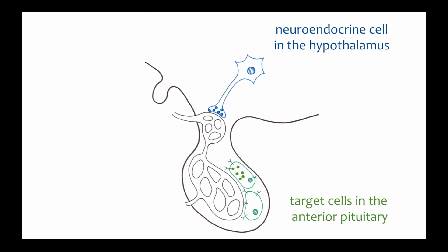The integration of the nervous system and the endocrine system often results from a cascade of hormone release that starts with the hypothalamus. A signal from the nervous system comes into a neuroendocrine cell in the hypothalamus, triggering the formation of an action potential. The action potential causes the release of a neurohormone, often called a releasing factor, into the bloodstream. The neurohormone binds to a receptor on its target cell in the anterior pituitary, triggering the release of a hormone into the bloodstream, where it will ultimately reach the target cell.